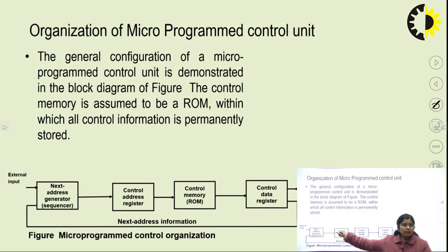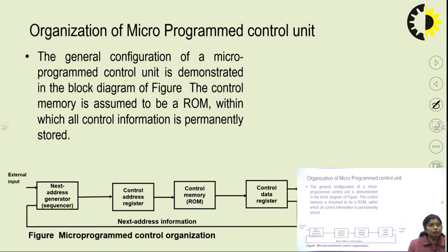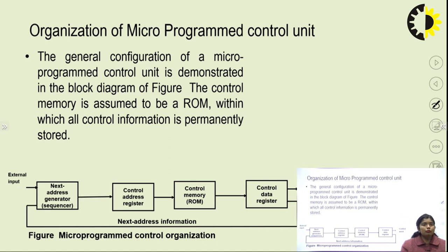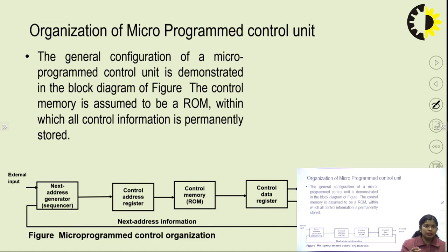Looking at the micro-programmed control organization: external input comes in, there is a next address generator — which is actually the micro-programmed sequencer — followed by the control address register, control memory, and control data register. The next address generator holds the address of the next instruction to be executed, similar to how the program counter works in main memory.